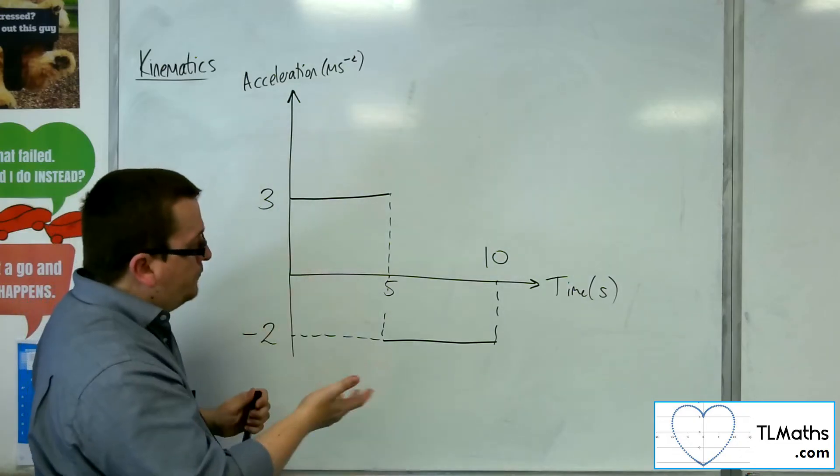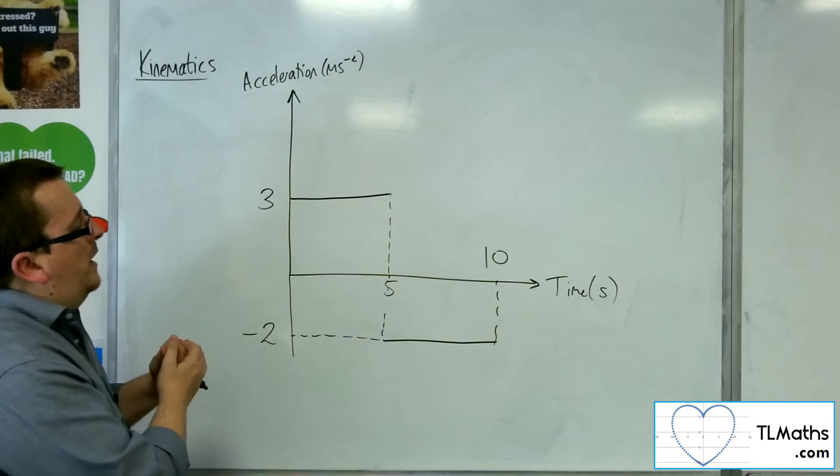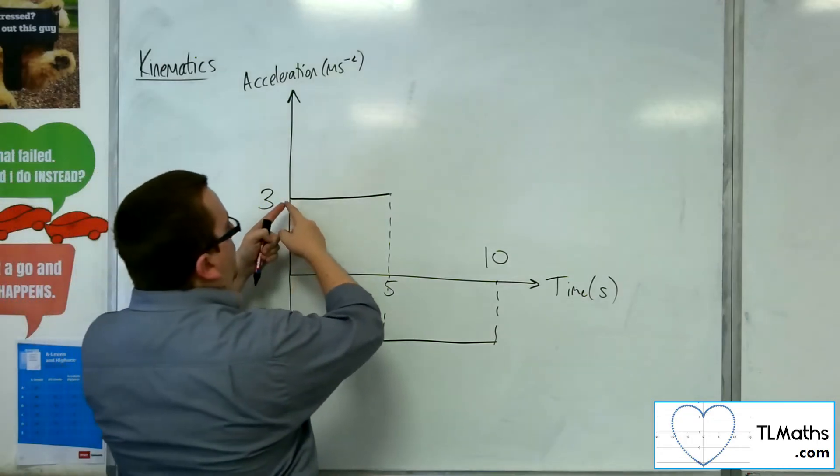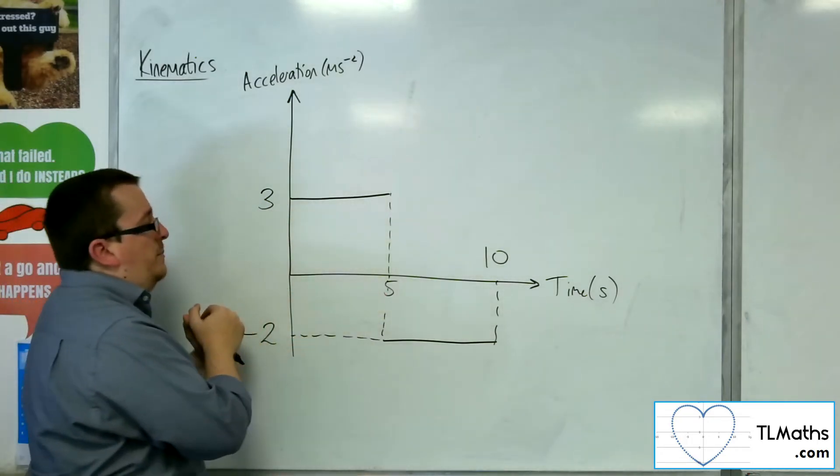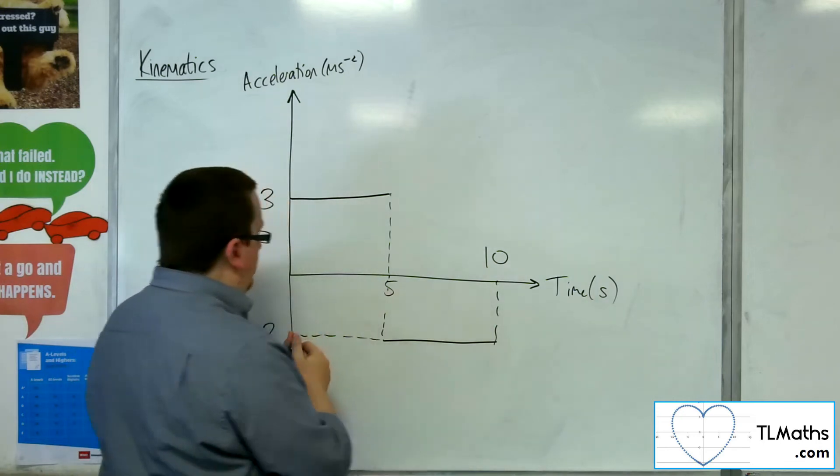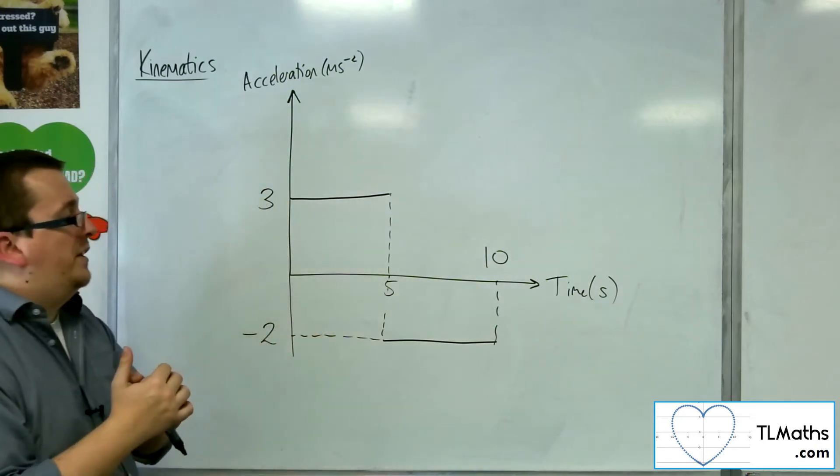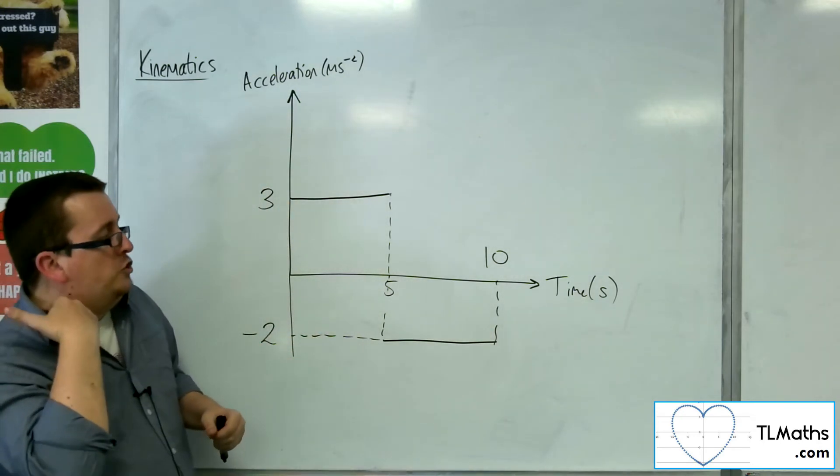That's kind of where it comes from. As you can see, if you're accelerating at three meters per second squared, and then you are decelerating at two meters per second squared suddenly, you'll get that kind of jerky motion.